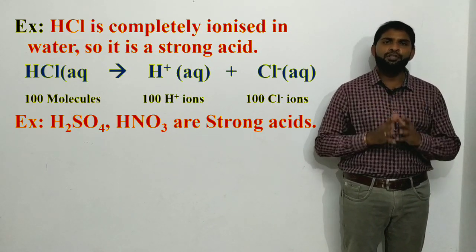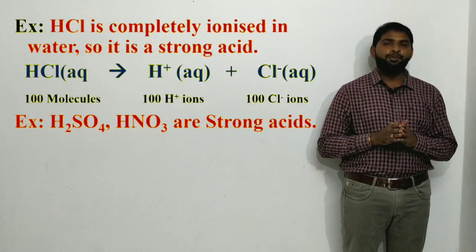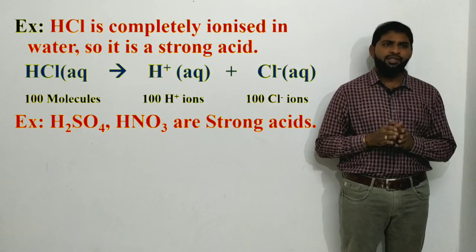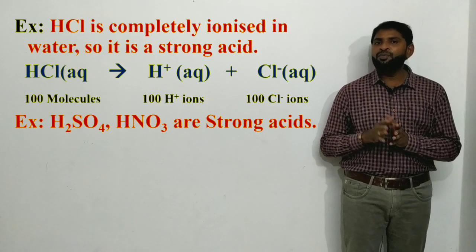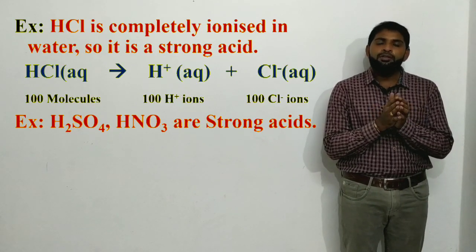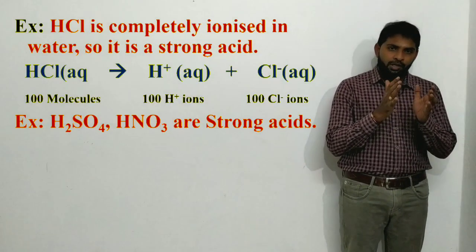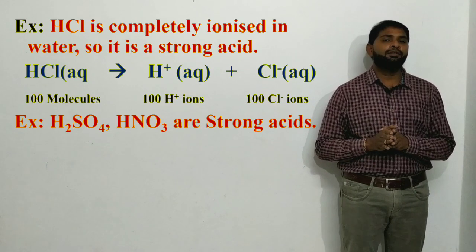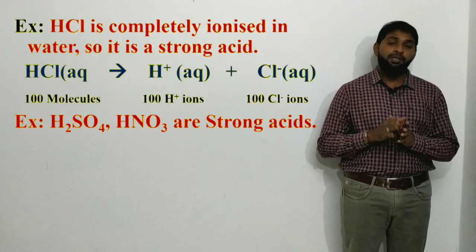A strong acid undergoes complete ionization — when you add it to water, it dissociates into ions. A substance which can undergo 100% ionization is called a strong acid. For example, if you take 100 molecules of HCl and add it to water, all 100 molecules undergo dissociation to give H⁺ and Cl⁻ ions — 100 H⁺ ions and 100 Cl⁻ ions. All reactant molecules form products; this is complete ionization.